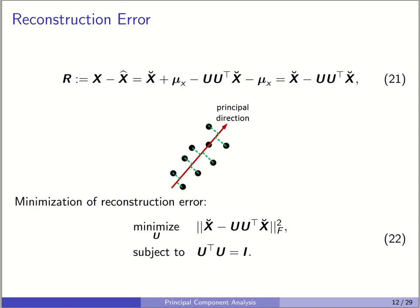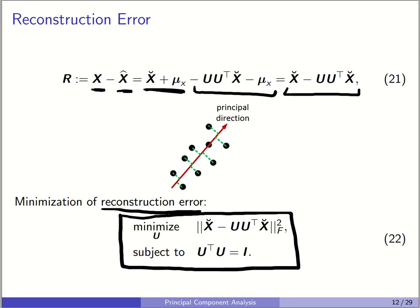PCA using singular value decomposition (SVD): consider the centered data X-breve (D by N). We apply SVD: X-breve = U * sigma * V-transpose, where U contains left singular vectors, V contains right singular vectors, and sigma is a diagonal matrix with singular values. We can prove that X-breve * X-breve-transpose = U * sigma-squared * U-transpose, and X-breve-transpose * X-breve = V * sigma-squared * V-transpose. Therefore, the left singular vectors U are the eigenvectors of X*X-transpose, and the right singular vectors V are the eigenvectors of X-transpose*X.